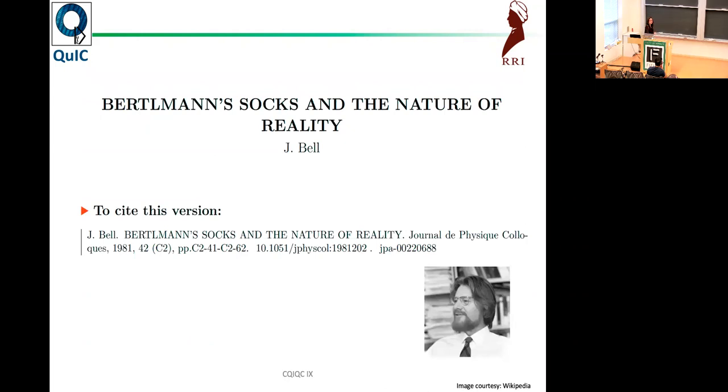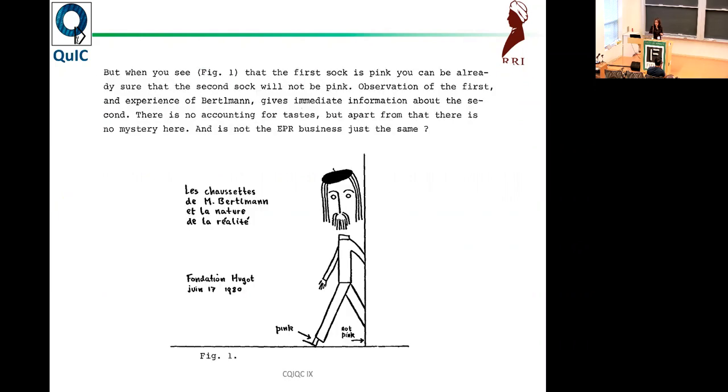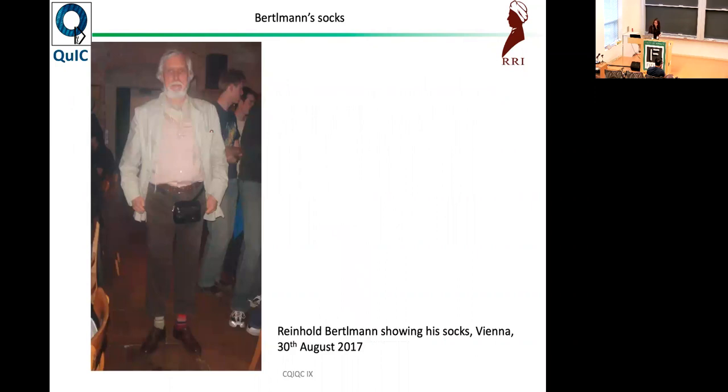This is the basic idea of realism, which brings us to John Bell, who, of course, we have talked about many times in other avatars during this conference. This very nice paper on Bertelman's socks and the nature of reality. The philosopher in the street who has not suffered a course in quantum mechanics is quite unimpressed by these EPR correlations. He takes the example of Bertelman, who is his good friend and colleague, whose socks are always of different colors. Which color he will have on a given foot on a given day is quite unpredictable. The first sock is pink, the other is not pink. Isn't that what we all talk about in these EPR correlations?